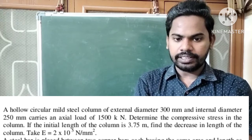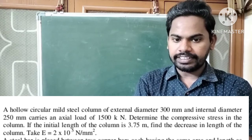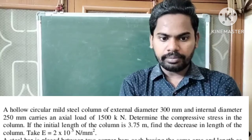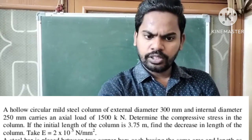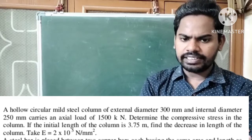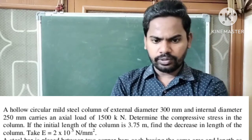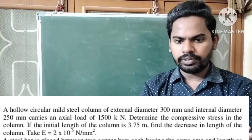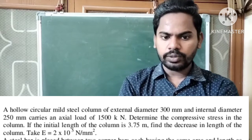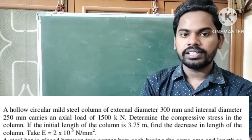A hollow circular mild steel column of external diameter 300 mm and internal diameter 250 mm carries an axial load of 1500 kilonewton. Determine the compressive stress in the column. If the initial length of the column is 3.75 meters, find the decrease in length of the column. Take E equal to 2 × 10⁵ newton per mm squared.